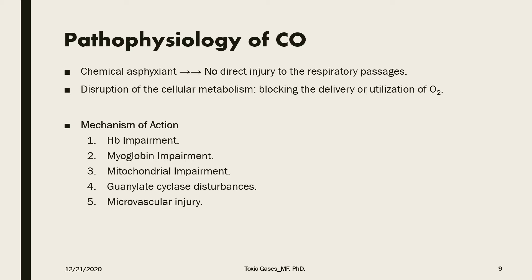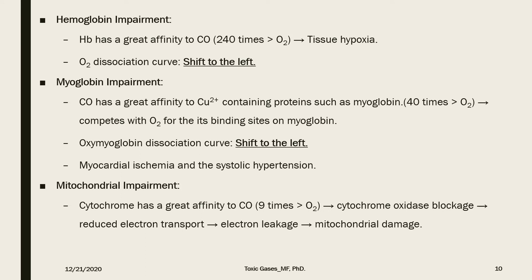There are several mechanisms of action, including hemoglobin impairment, myoglobin impairment, mitochondrial impairment, guanylate cyclase disturbance, and microvascular injury. Starting with hemoglobin impairment: hemoglobin has four oxygen binding sites, and binding of one site to carbon monoxide increases the affinity of oxygen at the other binding sites. This means oxygen will remain attached to the three other sites, interfering with proper release or unloading of oxygen in peripheral tissues — described as tissue hypoxia and a direct cause of shift to the left in the oxygen dissociation curve.